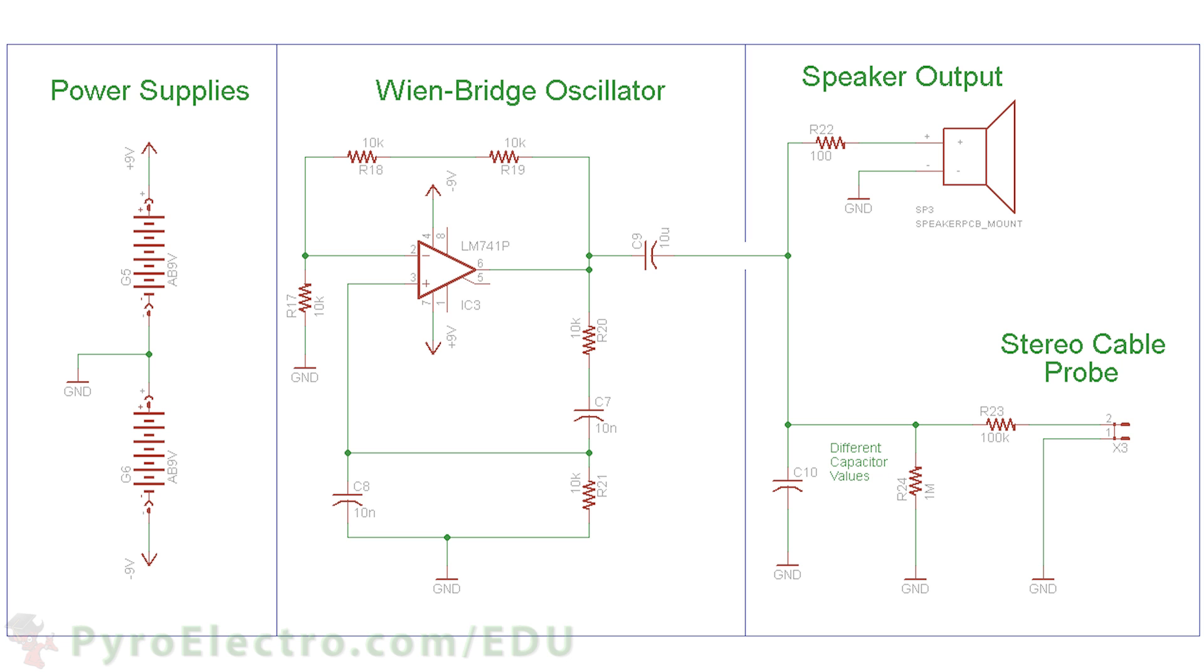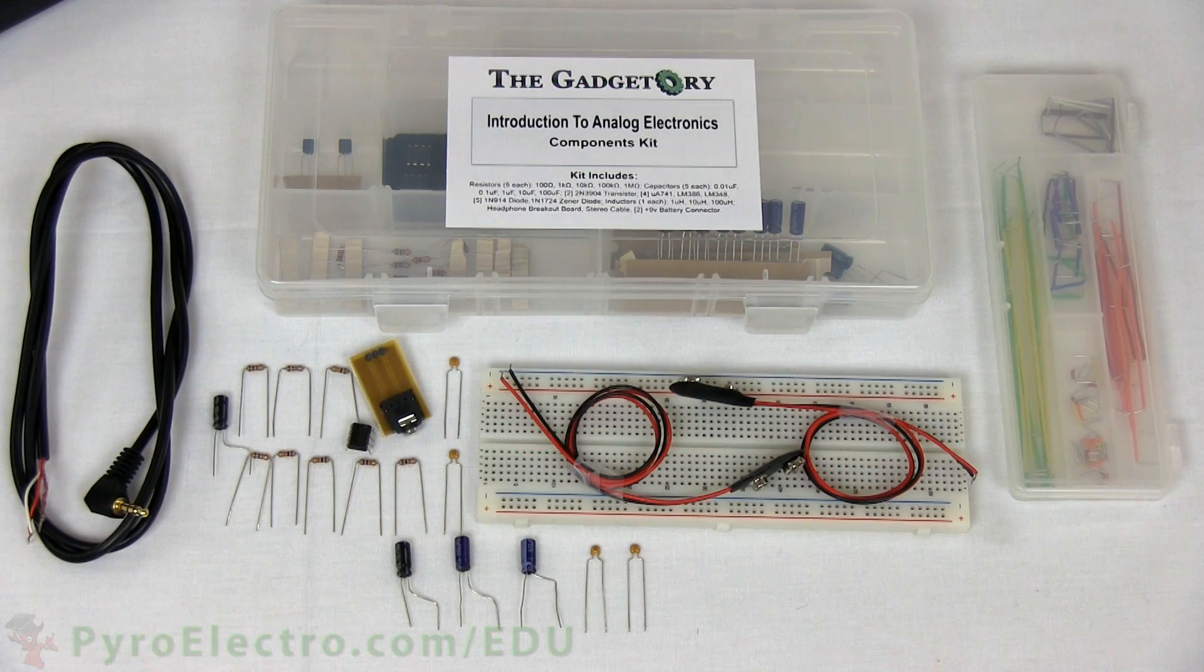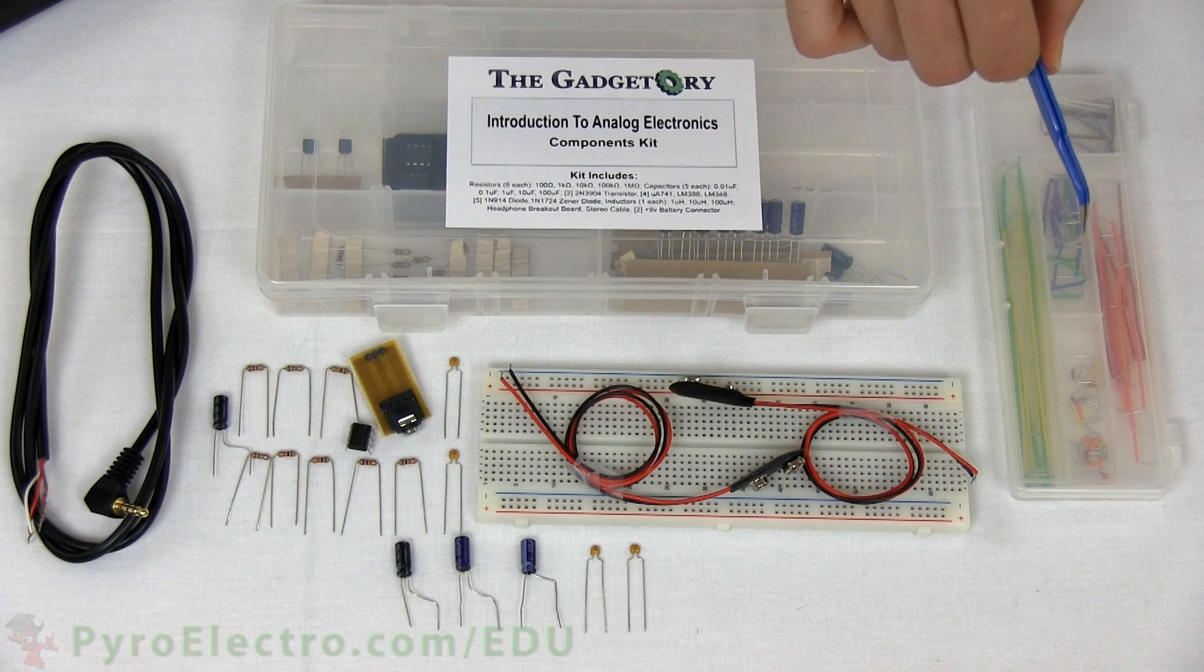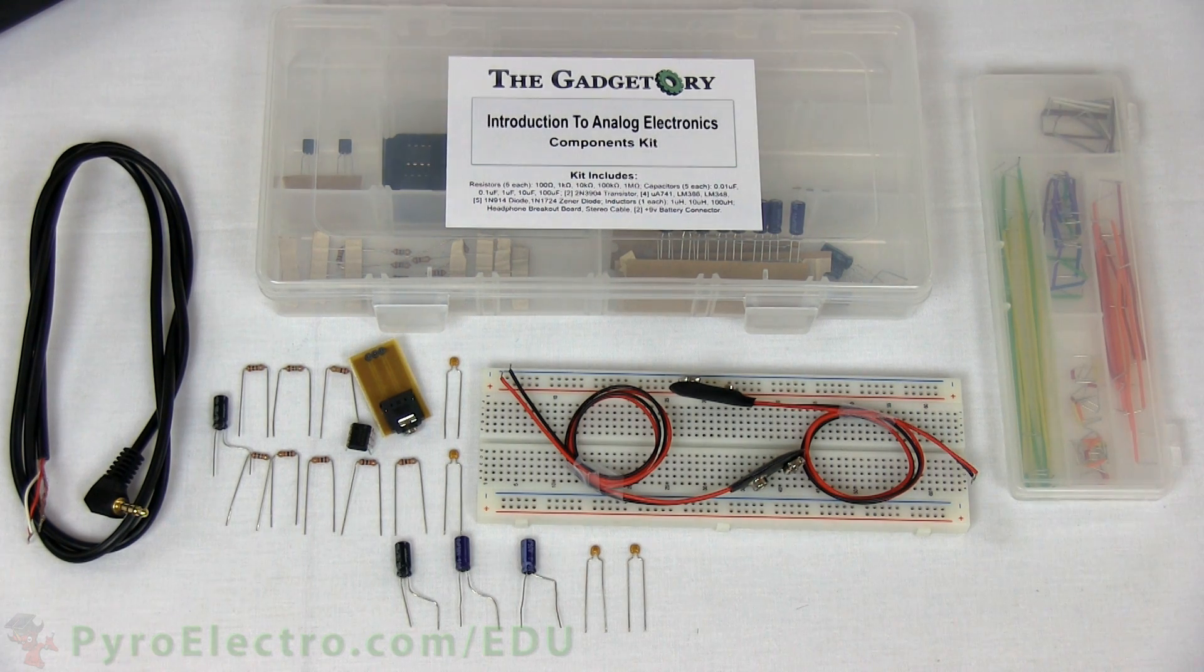So now, let's use our audio signal generator and play around with making some high-pass and low-pass passive filters. For this experiment, we'll need a breadboard, jumper wire kit, and from the components kit,